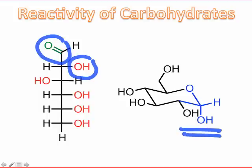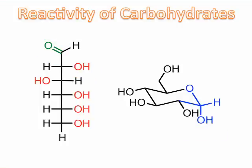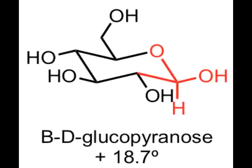Let's begin with an interesting observation about the optical activity of chiral cyclic monosaccharides. Let's imagine that we were able, through chromatographic separation or other means, to isolate only the beta-anomer of D-glucose. Placing beta-D-glucose in a polarimeter to measure its optical activity reveals a specific rotation value of plus 18.7 degrees.